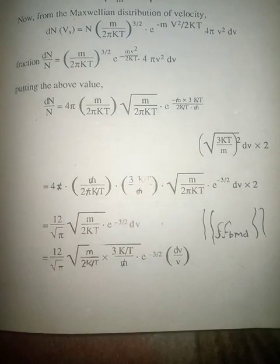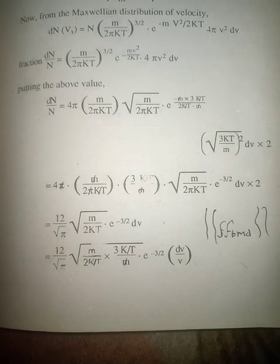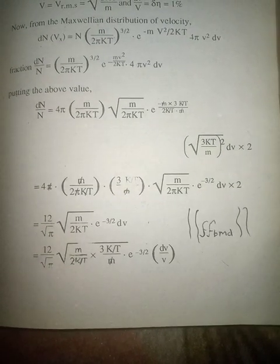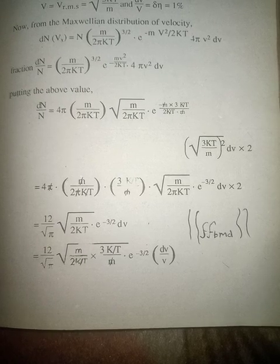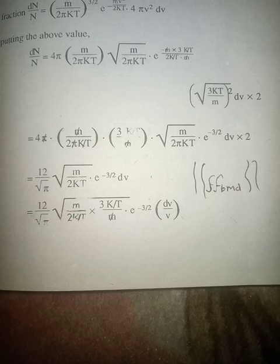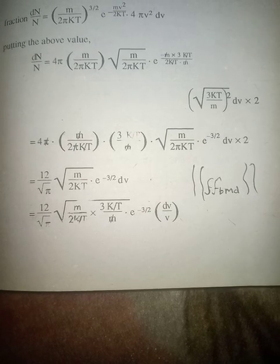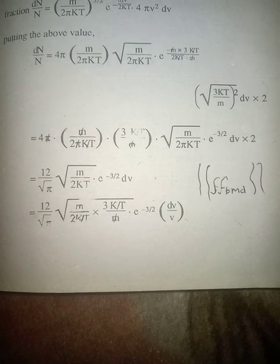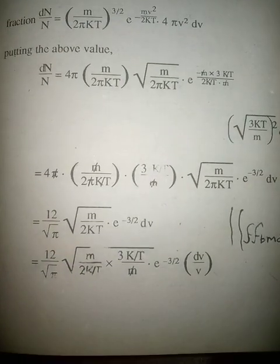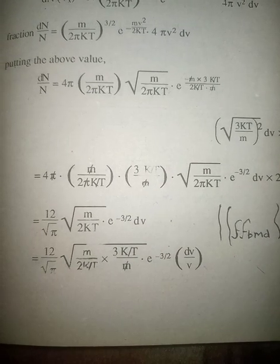Putting in the above values: dN/N = 4π × (m/2πkT) × √(m/2πkT) × e^(−m × 3kT/2kT) × √(3kT/m) × (3kT/m) dv × 2, which simplifies to 4π × (m/2πkT) × (2kT) × e^(−3/2) dv × 2, giving (12/√π) × √(m/2kT) × e^(−3/2) dv, or (12/√π) × √(m/2kT) × √(3kT/m) × e^(−3/2) × dv/d.